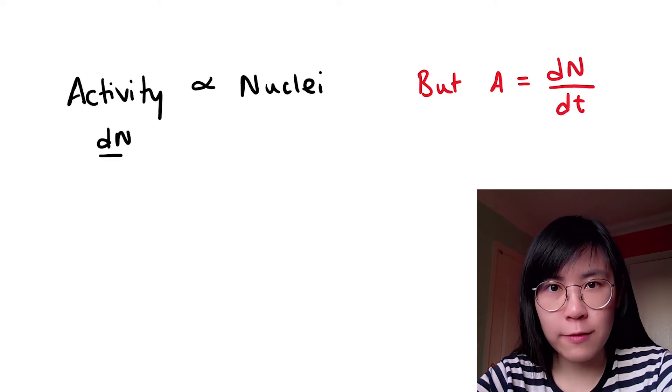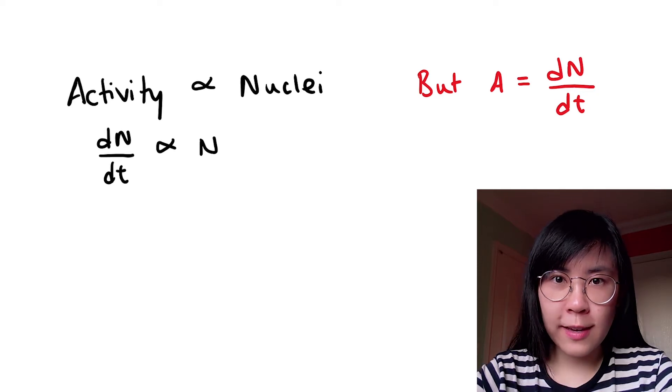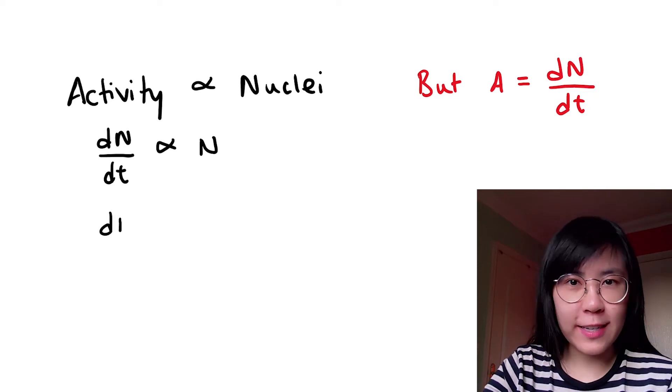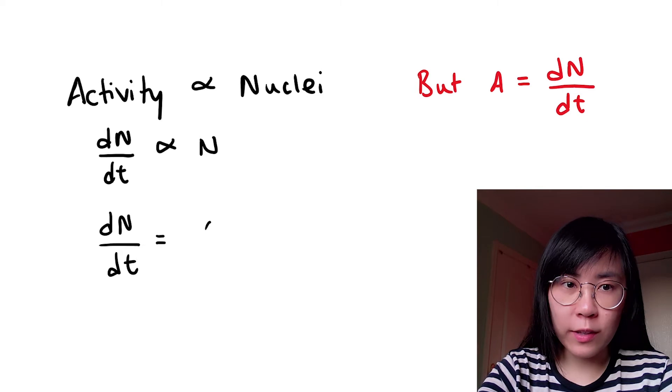So let's replace activity with this new expression here. Instead of keeping the proportionality sign I'm going to replace it with a constant lambda.